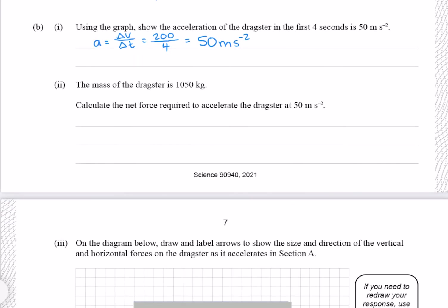The mass of the dragster is 1050 kilograms. Calculate the net force required to accelerate the dragster at 50 meters per second per second. We know that force equals mass times acceleration. Our mass is 1050, our acceleration is 50, which gives me 52,500 newtons.